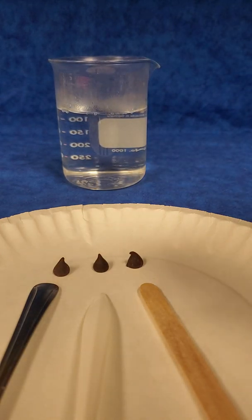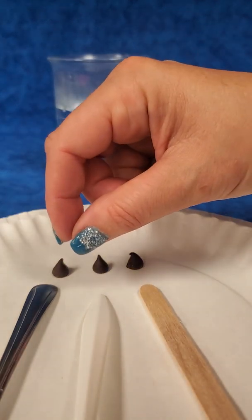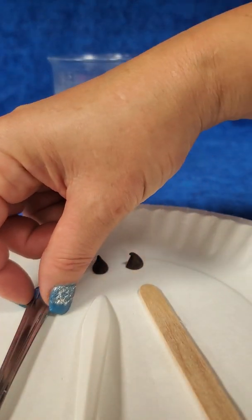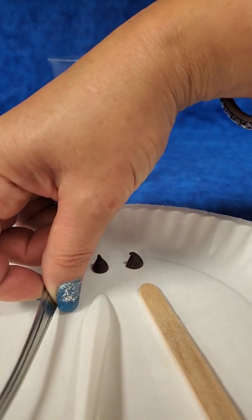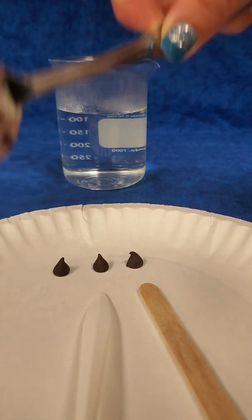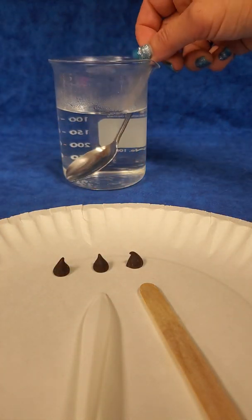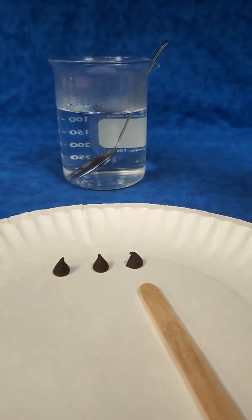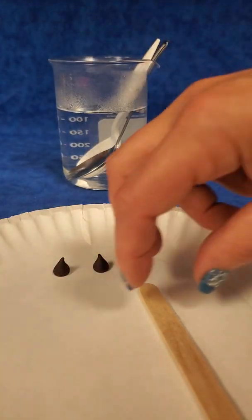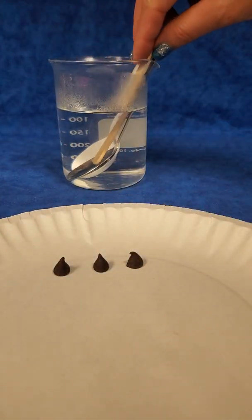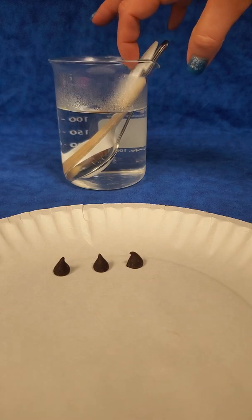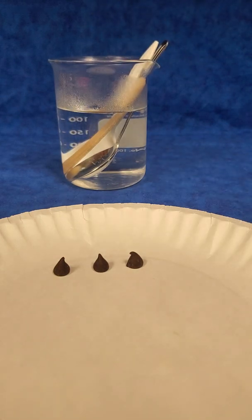If you used a pot to boil the water on the stove, you could also just set the spoons in the pot. I am going to place the spoons in. Notice that the ends of the spoons are still available for me to get out later. You will need to do the same thing.